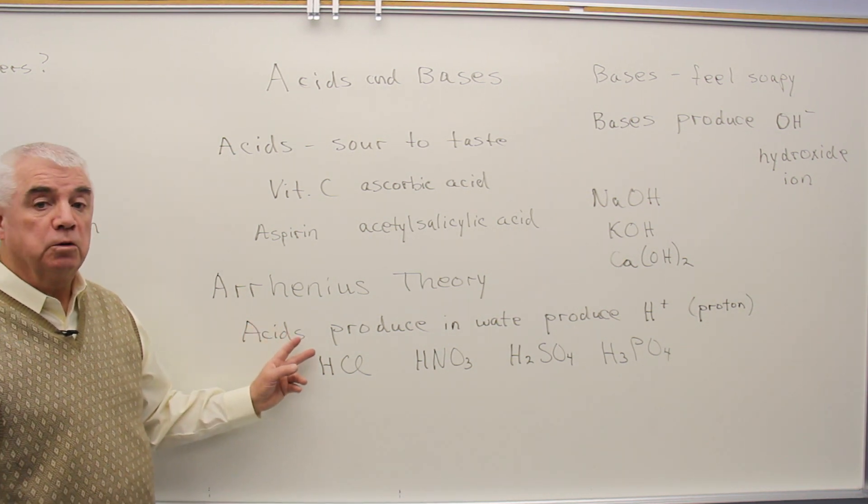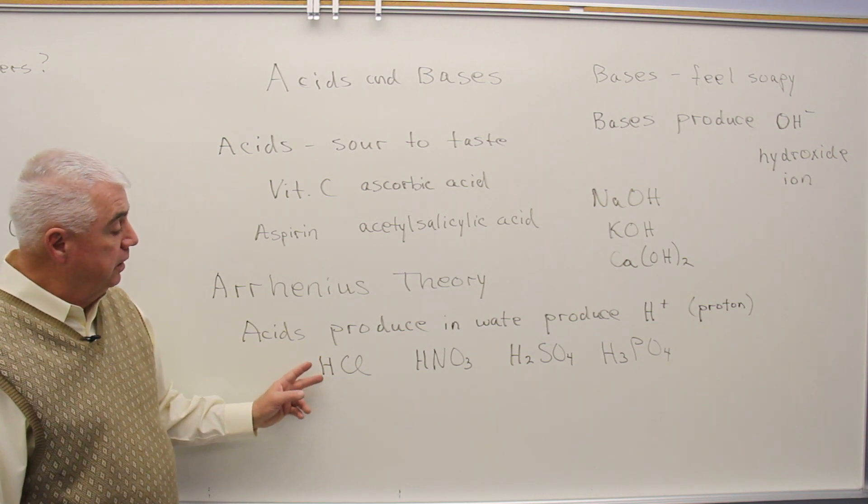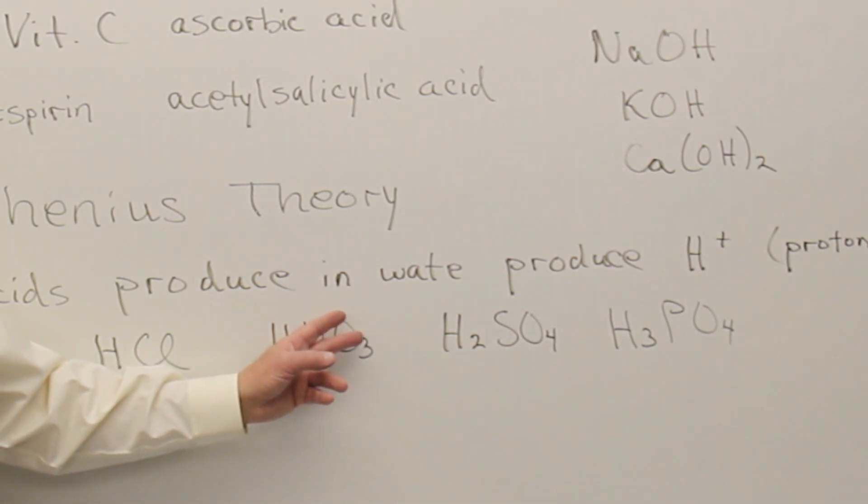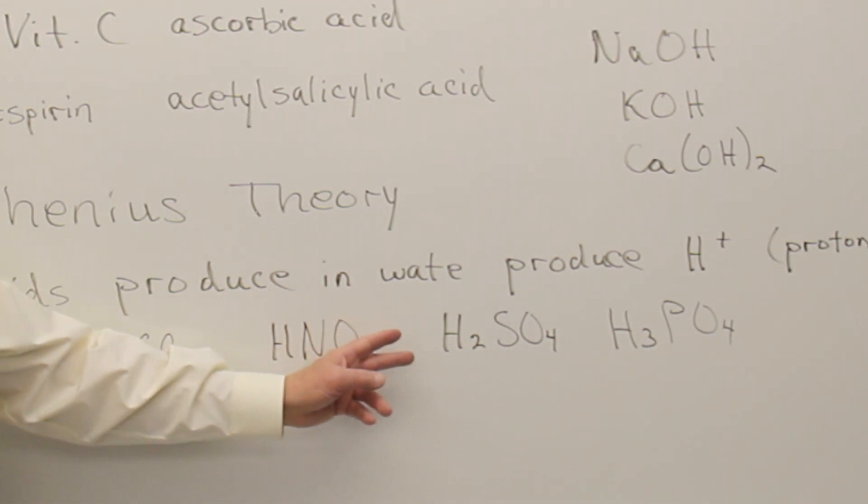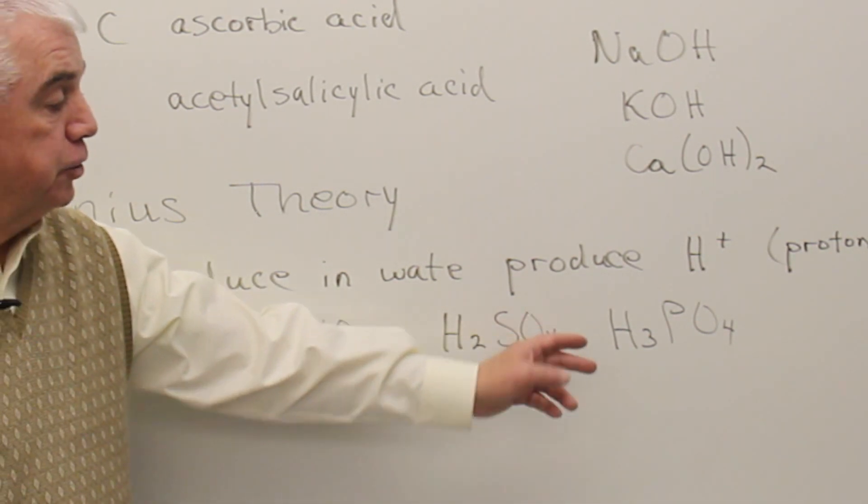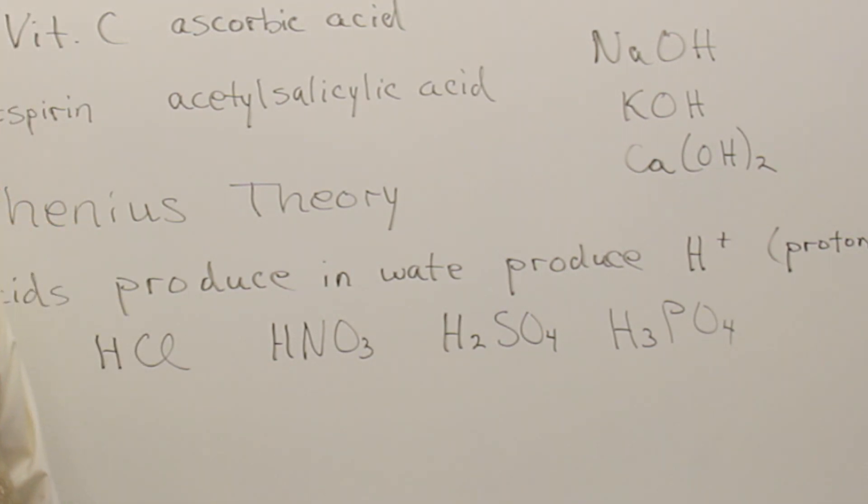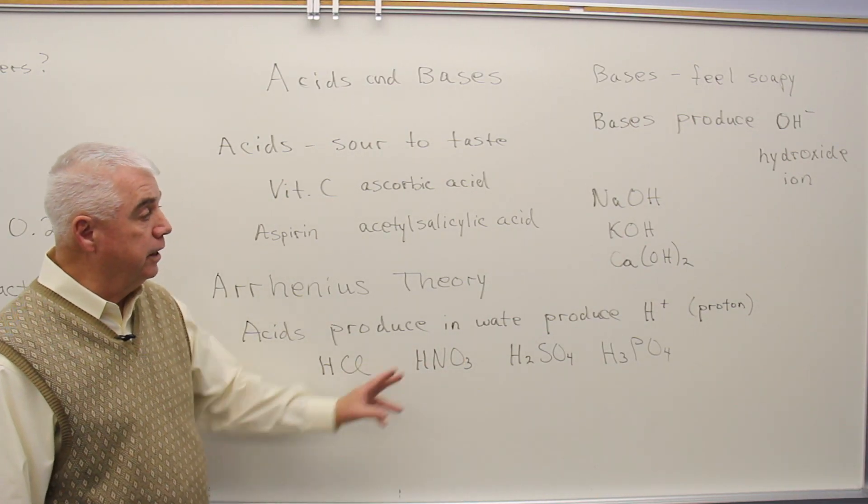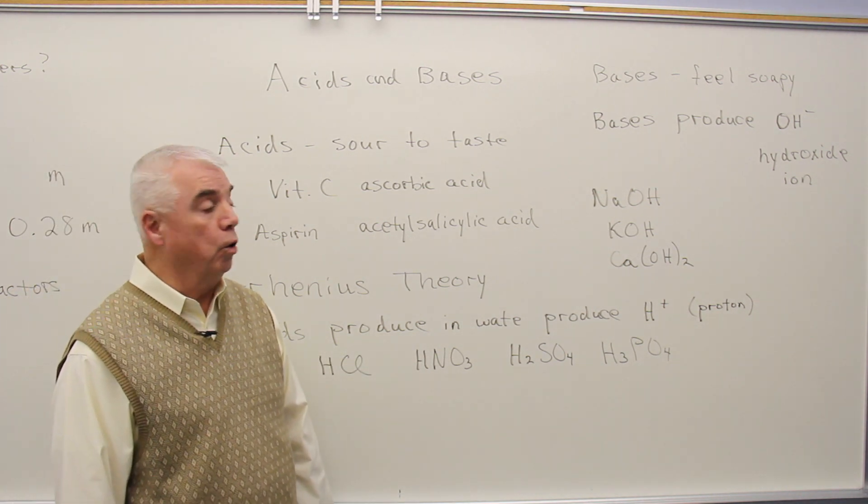Some examples of Arrhenius acids: hydrogen chloride, HCl, HNO3, notice that the hydrogen is usually written first. H2SO4 is sulfuric acid, that's battery acid, and H3PO4, phosphoric acid. All pretty common acids in the laboratory, and some of these we encounter in our home as well.